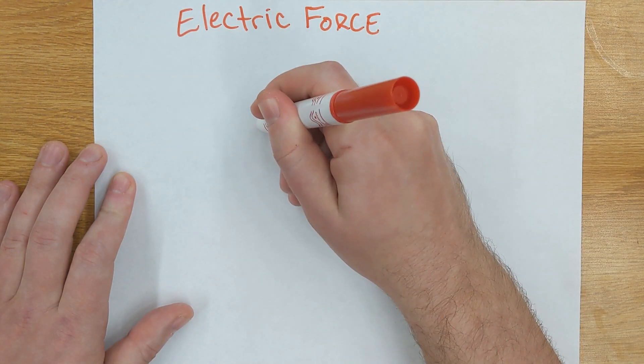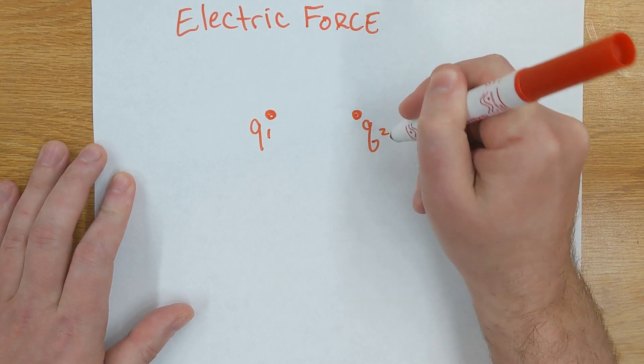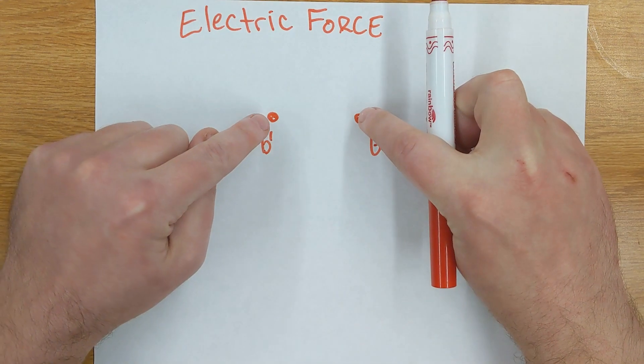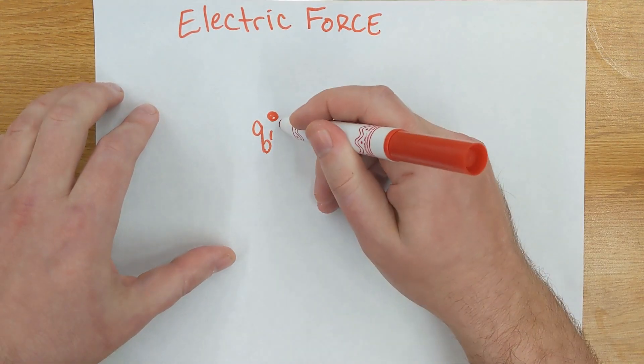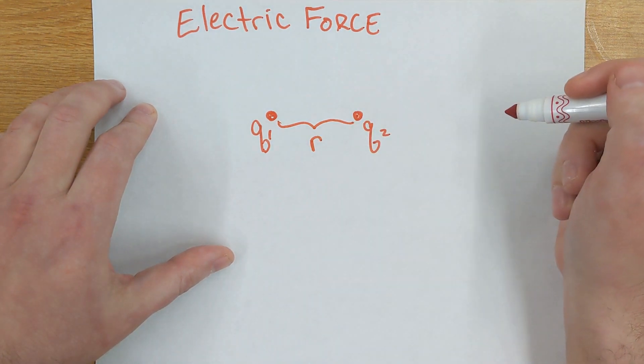Coulomb's law says if I have one charge q1 and another charge q2, suppose those are the same sign of charge, they're both positive, what's going to happen to them? They'll be repelled from each other, and we have a way of knowing how strongly they'll be repelled from each other based on how far apart they are.